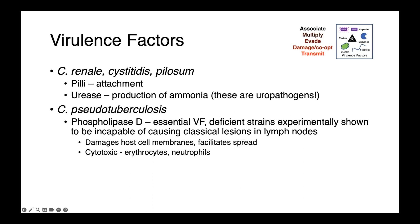Urease is an enzyme which allows the production of ammonia from urea — the nitrogenous waste of mammals — and it provides these organisms with a valuable source of nitrogen. They also produce pili, which facilitate attachment to the uroepithelium.